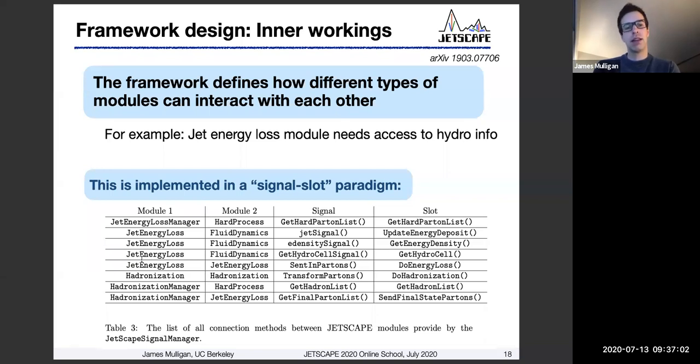This is implemented in Jetscape in a so-called signal slot paradigm. This means basically that there are certain places in the code or certain connections between specific modules that are allowed and which expect certain specific information to be present. We'll see a bit more detail of this, some examples, when we go through how to write your own custom module. But this table here shows you the connections between these various modules. For example, the energy loss module needs to be connected to the fluid dynamics module and it expects some particular information to flow from one to the other.